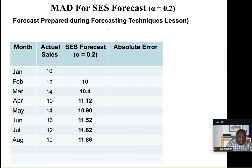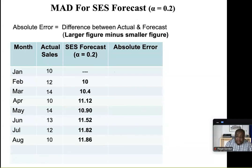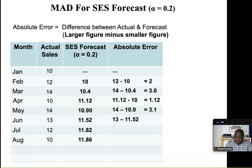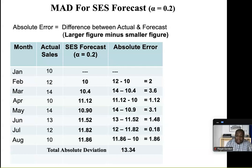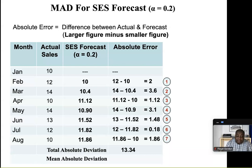Simple exponential smoothing with alpha equals 0.2. For February we have 2, March 3.6, April 1.12, May 3.1, June 1.48, July 0.18, and August 1.86. This gives us a total of 13.34 as our total deviation. We want the average for the MAD — we have 7 errors, so we're dividing 13.34 by 7 to get 1.91 as our mean absolute deviation.